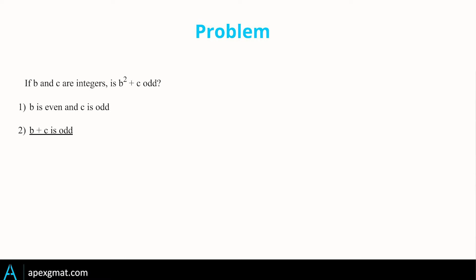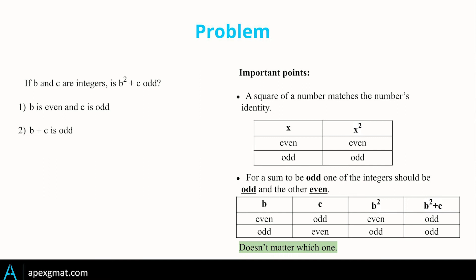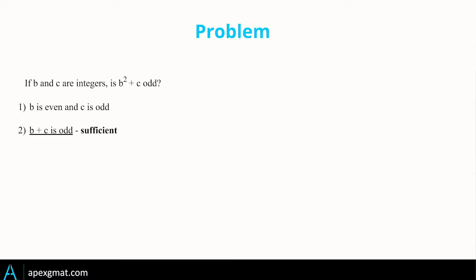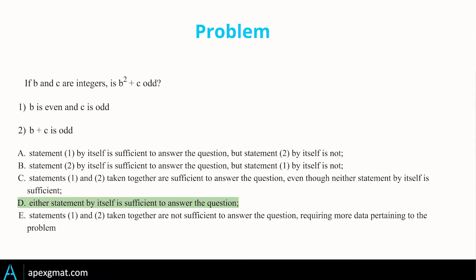If Statement 1 were more complex, we'd spend more time on Statement 2. Diving in more deeply: because b + c is odd rather than even, one must be even and the other must be odd. And because it doesn't matter which is which — something we ascertained when analyzing the question stem, which is why proactive thinking is so important — as long as one is each, that's going to be sufficient. So the answer is D.